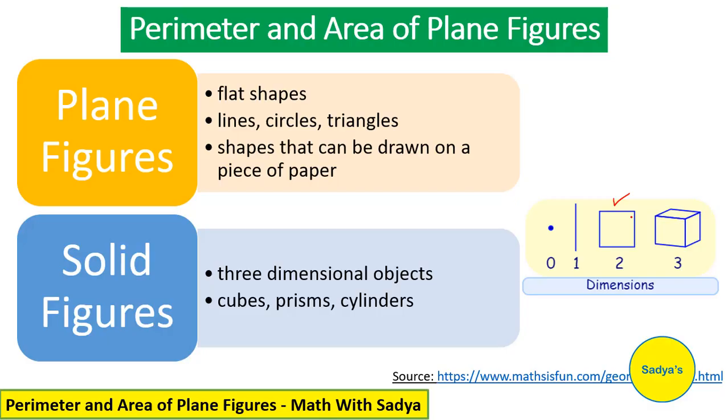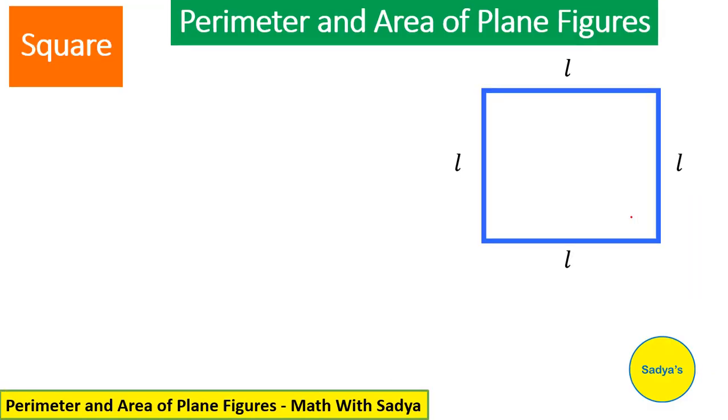So, now let's find the perimeter and area of plane figures. First of all, square.